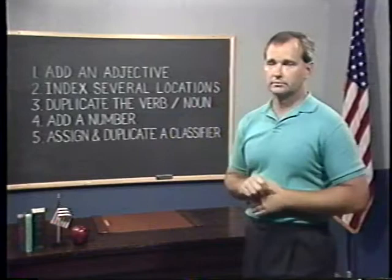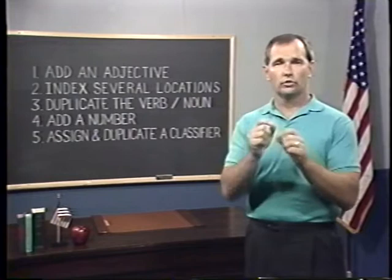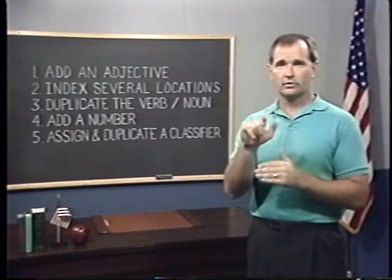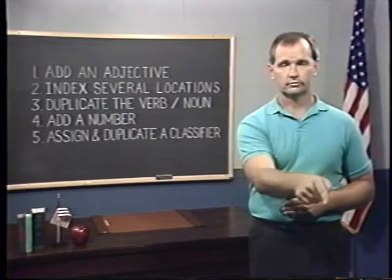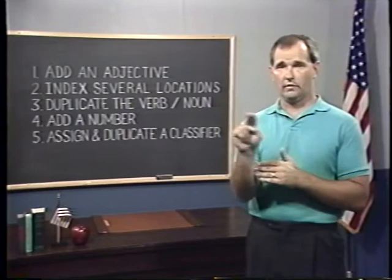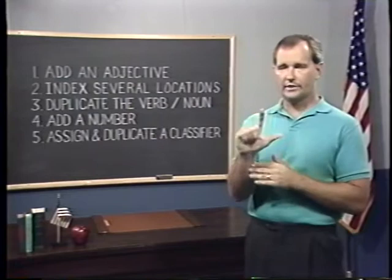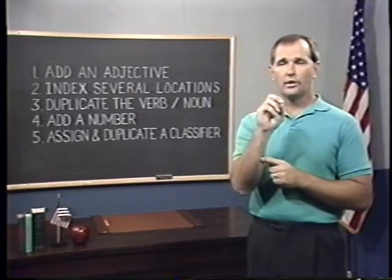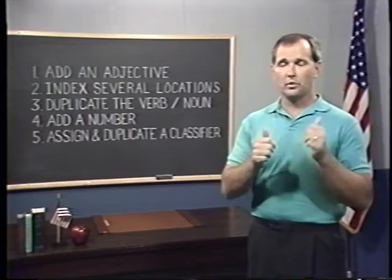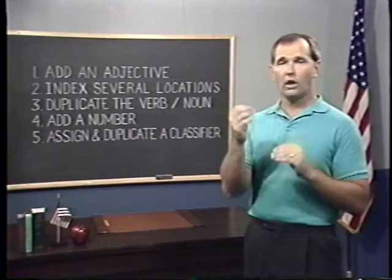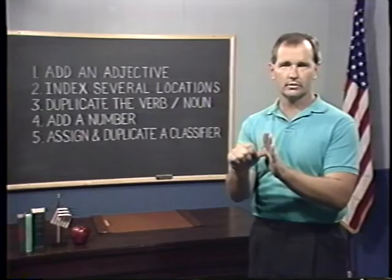In American Sign Language, there are several ways that a sign can indicate plurals. Listed here are the major ways to form plurals: add an adjective that indicates plural, index several locations, duplicate the verb, duplicate the noun, add a number, assign a classifier and duplicate it. I will give you one or more examples of each of these. Usually, it doesn't matter which method you choose. A person may choose to use more than one of these in the same sentence for clarity or for emphasis.